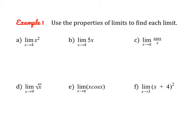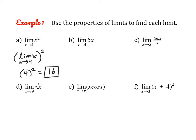So here we have a few problems where we could just do direct substitution, but we're going to go out of our way to use the properties so you've seen them with a more basic problem. This first one is a power function. We can find the limit of x as x approaches 4, and then raise that limit to the power of 2. The limit of x as x approaches 4 is just 4, and then 4 squared is 16 — the same result we'd get by direct substitution.